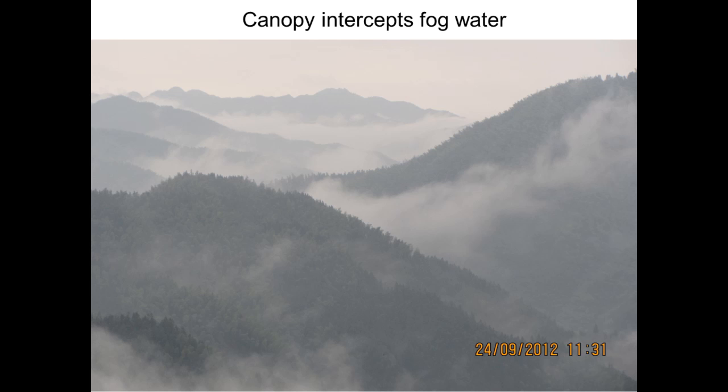The last photo shows a situation with no rainfall, but you can see a lot of fog flowing onto the canopy. This fog can wet the canopy as well, so you will see some throughfall and stemflow even with no rainfall. In some situations this happens, and fog deposition can become an important component of the land surface water balance that we need to consider.